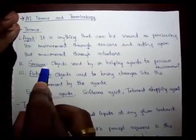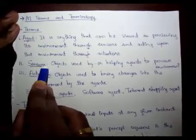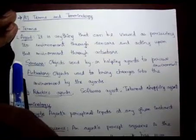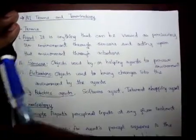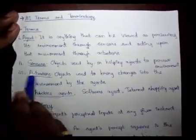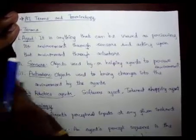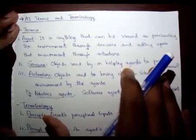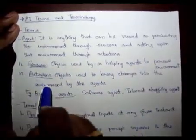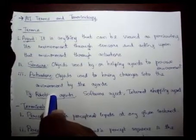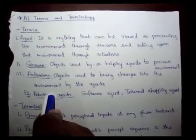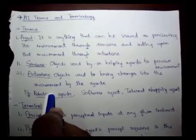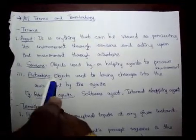Sensors are objects which help the agent perceive its environment or get information about the environment and come to a conclusion. Actuators are used after the agent has come to a conclusion. The agent will output information onto the environment, affecting the environment around it. Such objects are known as actuators.